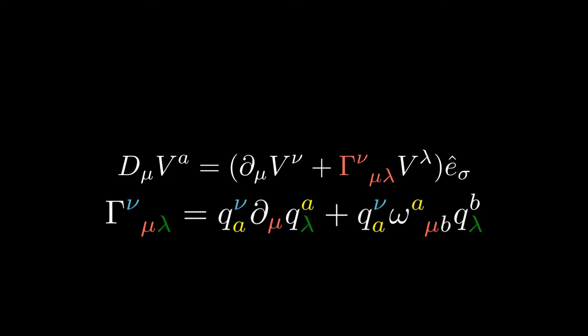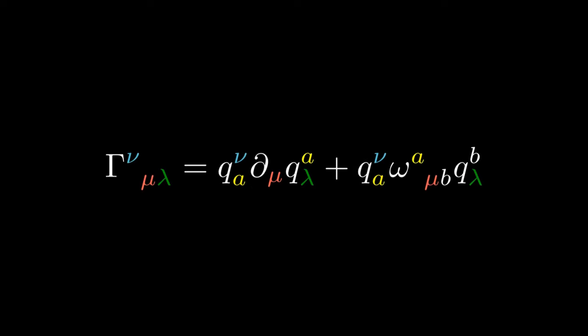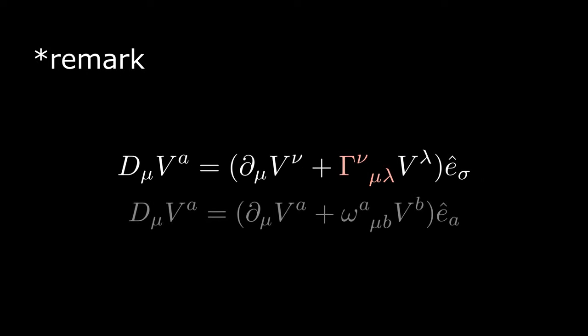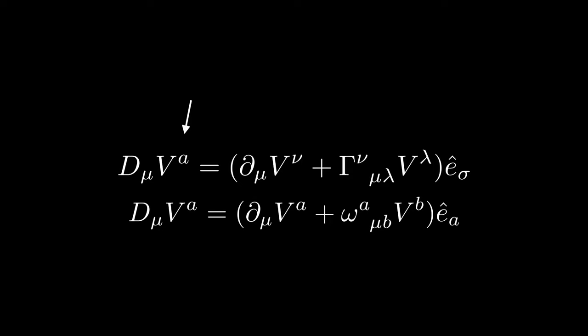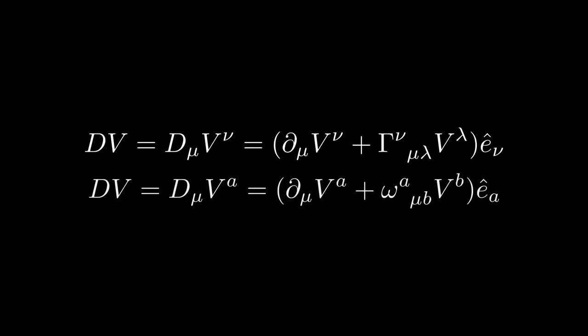So previously I started explaining here why we have va, a Latin index, but we describe it with the base components. And instead of that, I'm just gonna say, after all, all these indices is just convention. So I wouldn't worry much about it. But who knows, maybe it is important, so let me know in the comments.